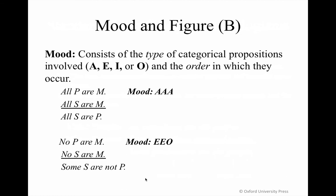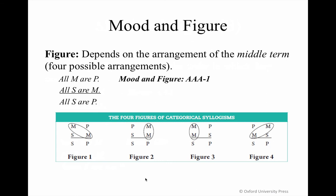If you're given the mood and figure, you can discern how the argument lays out from those elements alone. The figure has to do with the placement of the middle term in the premises. Figures are always one, two, three, or four, reflecting the order of the middle term.